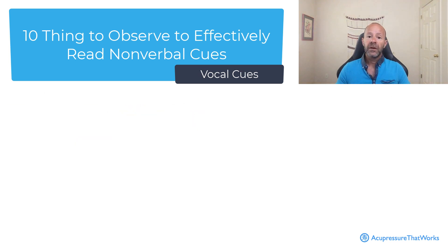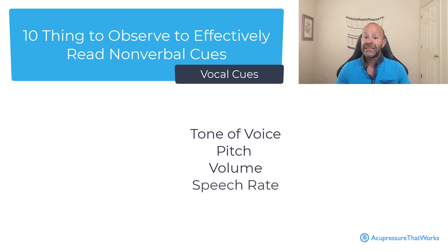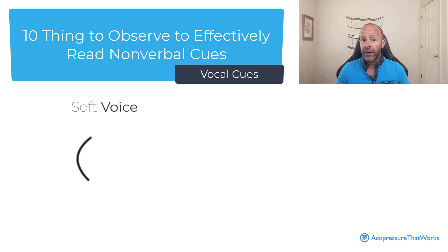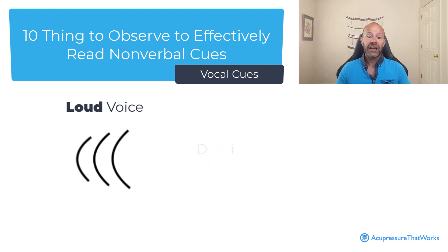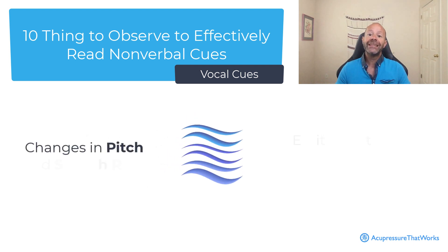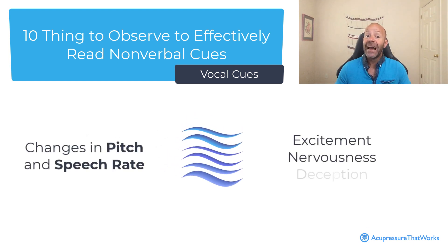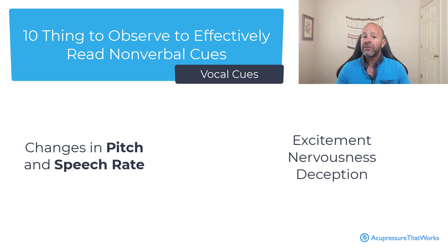Vocal cues. Nonverbal vocal cues such as the tone of voice, the pitch, the volume, and the speech rate greatly impact communication. A soft voice may indicate friendliness or sensitivity, while a loud voice can convey dominance or anger. Changes in pitch and speech rate can reflect excitement, nervousness, or deception. Pay attention to these vocal cues as they provide additional context and emotional undertones.